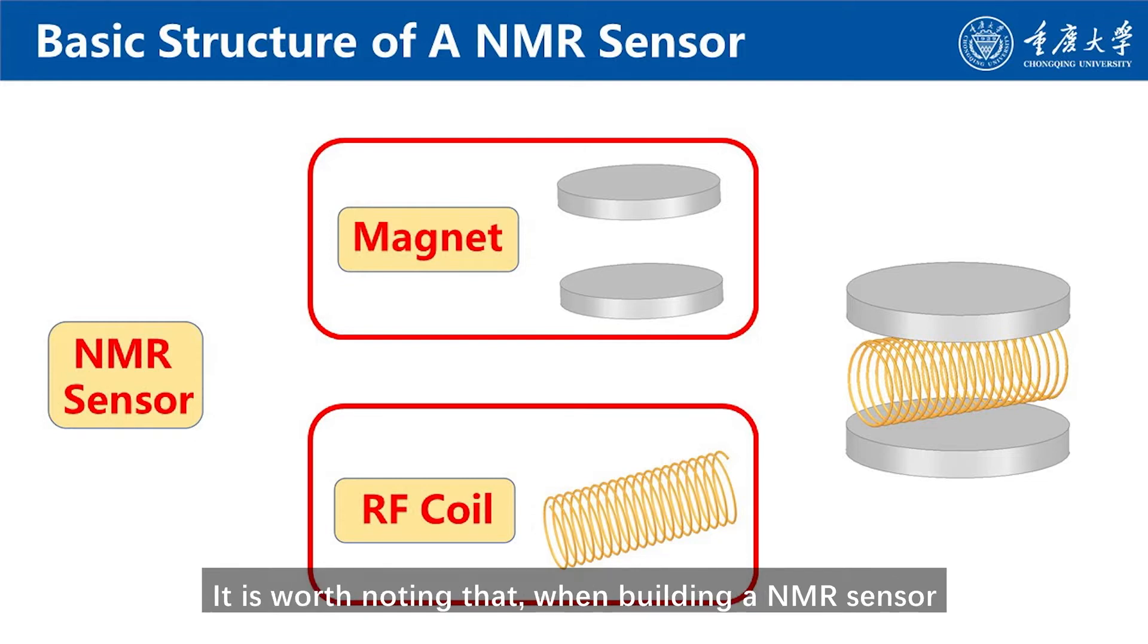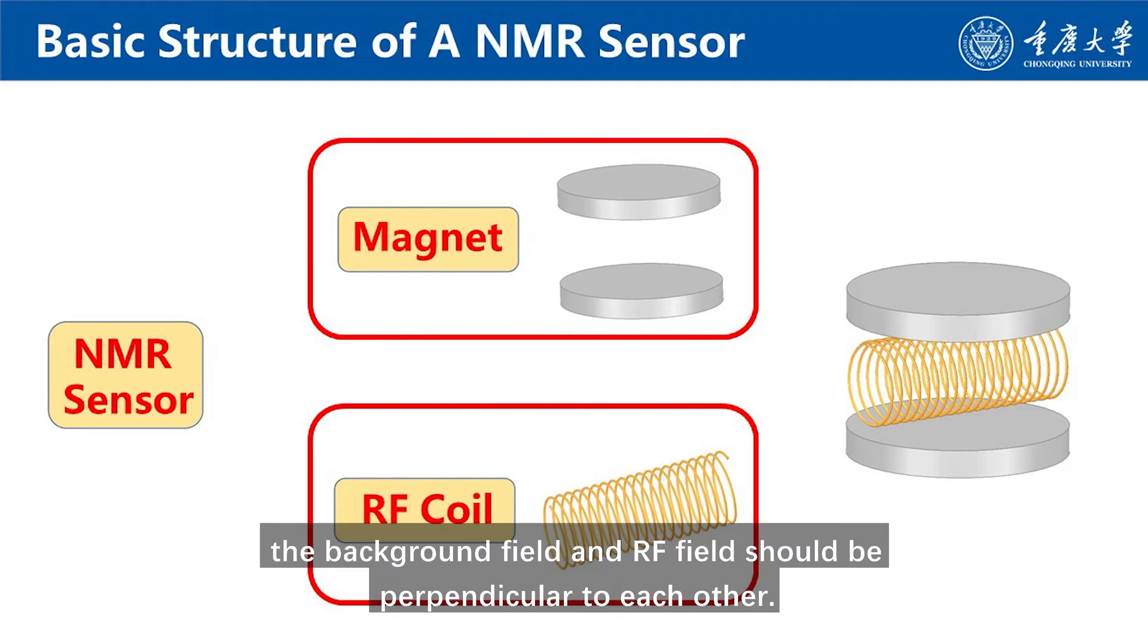It is worth noting that when building an NMR sensor, the background field and the RF field should be perpendicular to each other.